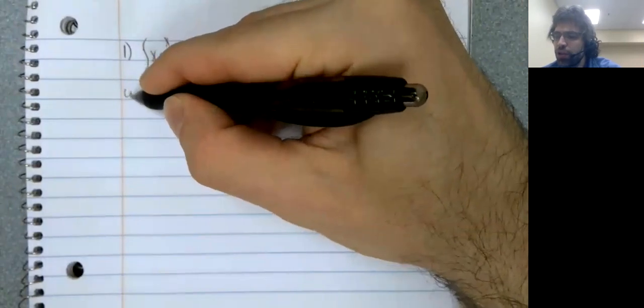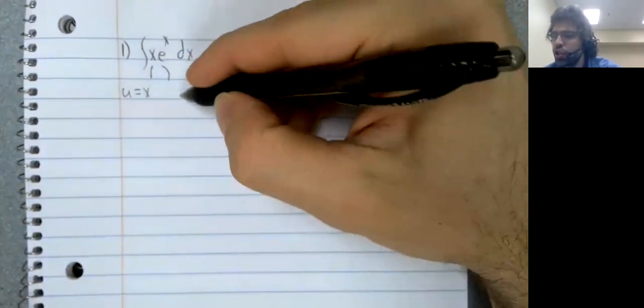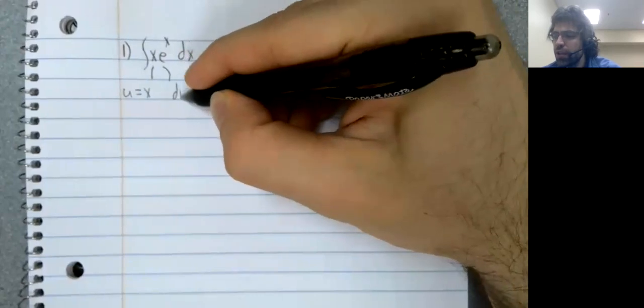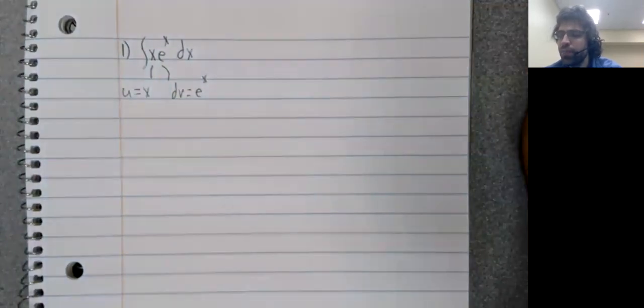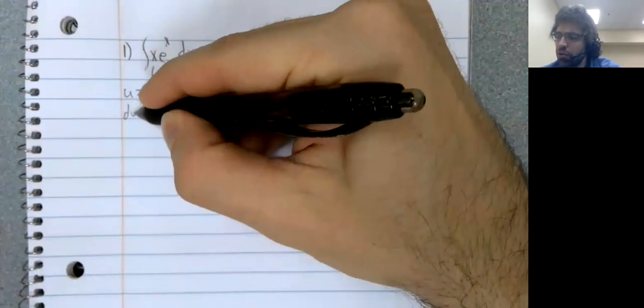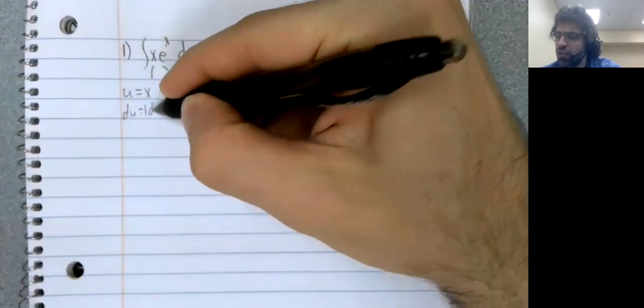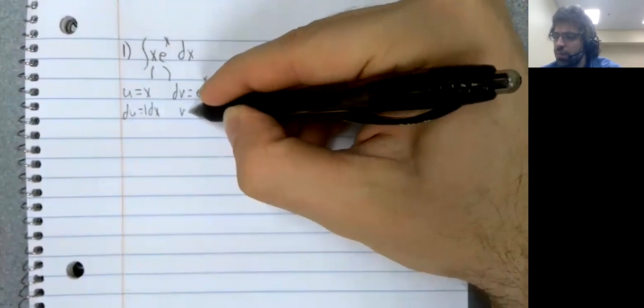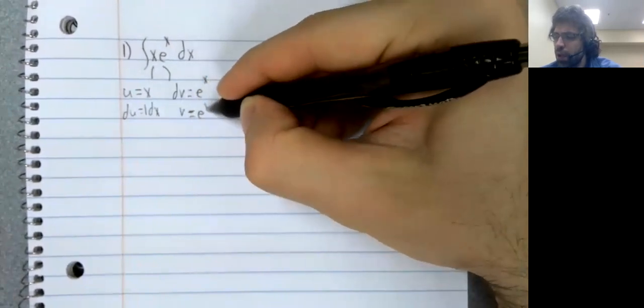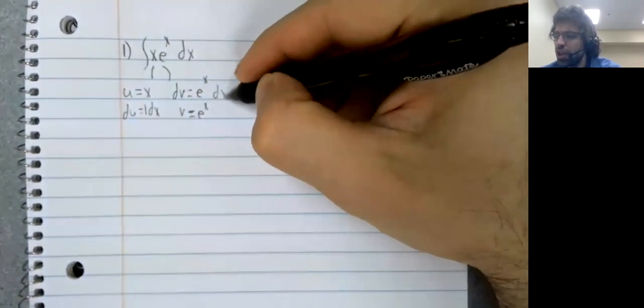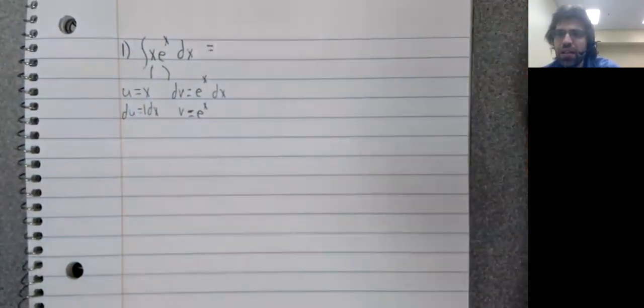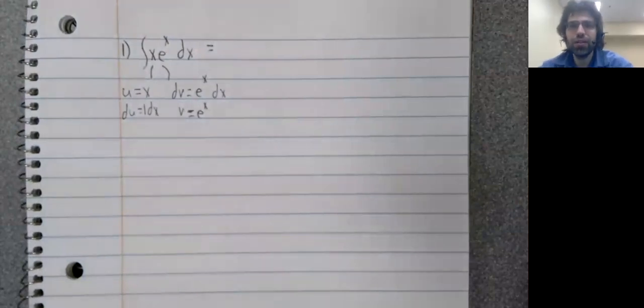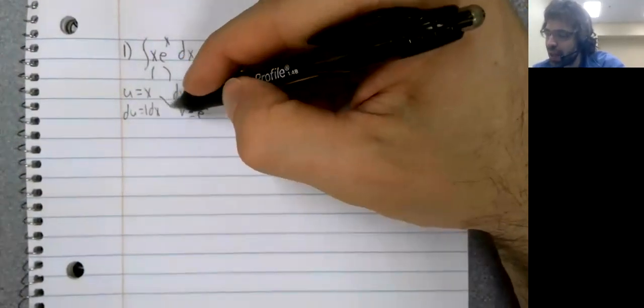And when you have that combination, the classic thing to try would be integration by parts. So let's see what that does for us. I mean, the answer could be nothing and then we have to try something else.